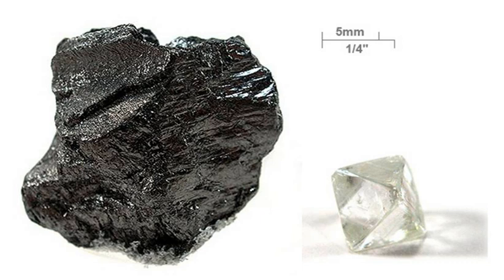Carbon sublimes at about 3,900 K. Graphite is much more reactive than diamond at standard conditions, despite being more thermodynamically stable, as its delocalized pi system is much more vulnerable to attack. For example, graphite can be oxidized by hot concentrated nitric acid at standard conditions to mellitic acid, C6, which preserves the hexagonal units of graphite while breaking up the larger structure. Carbon sublimes in a carbon arc, which has a temperature of about 5,800 K or 9,980 degrees Fahrenheit.